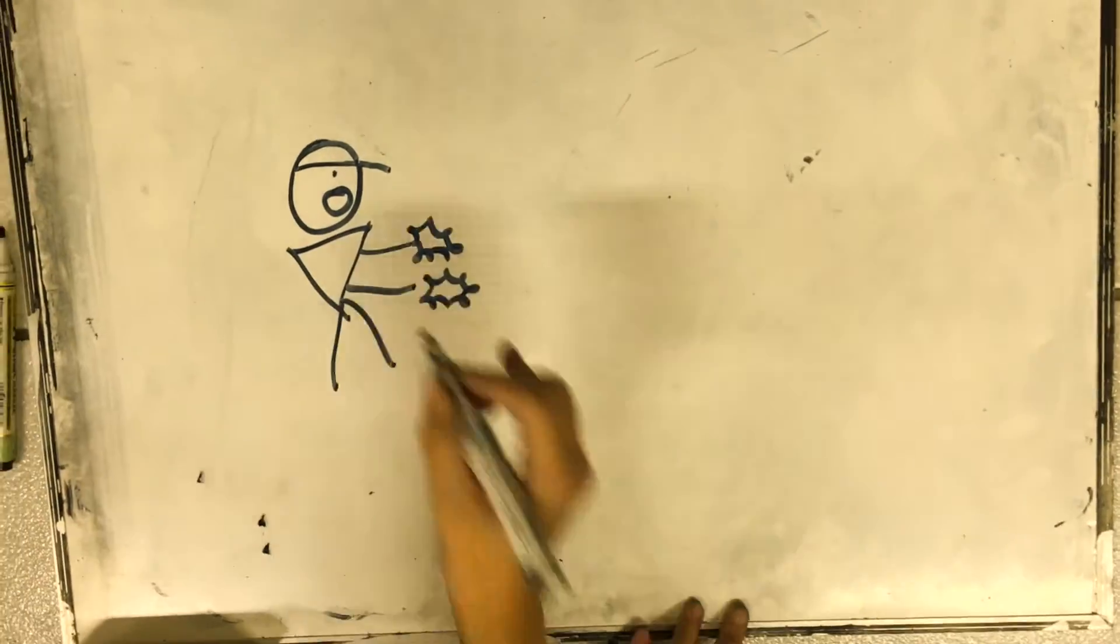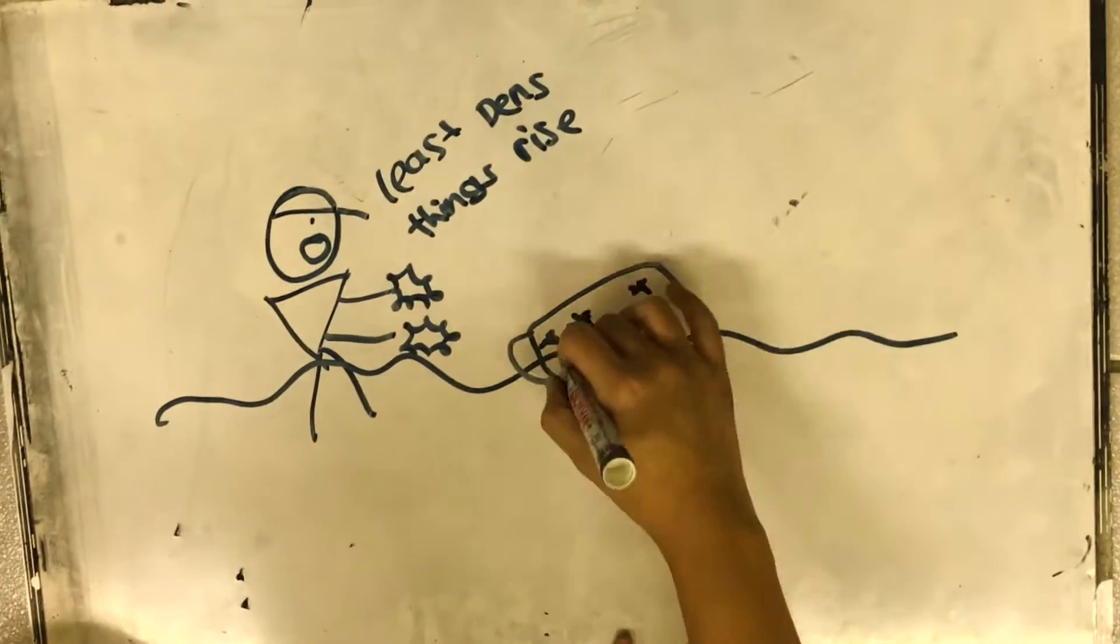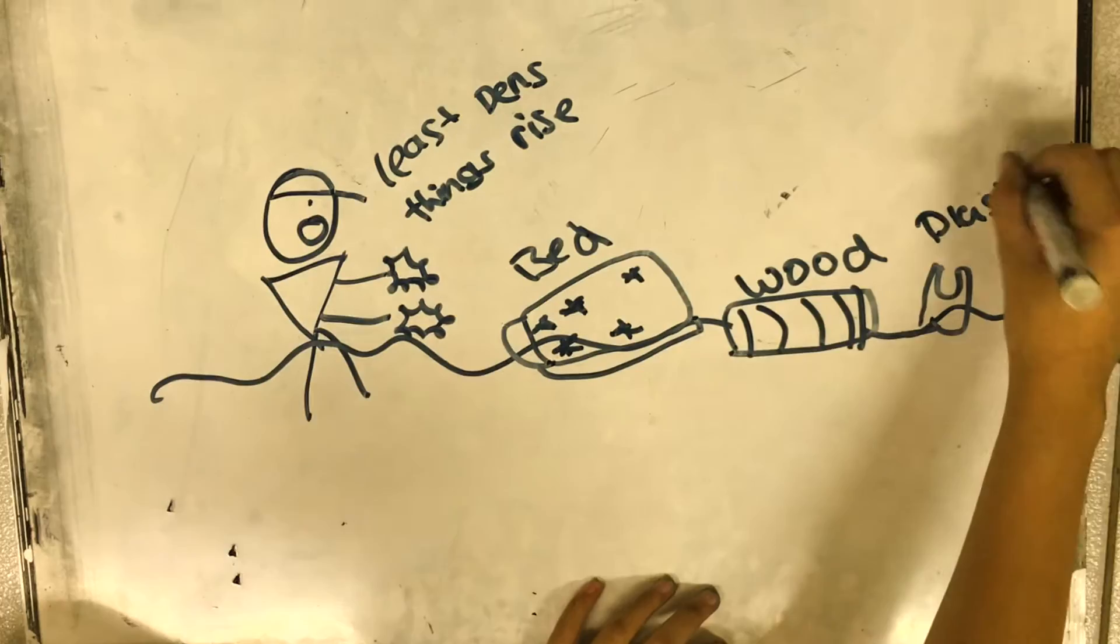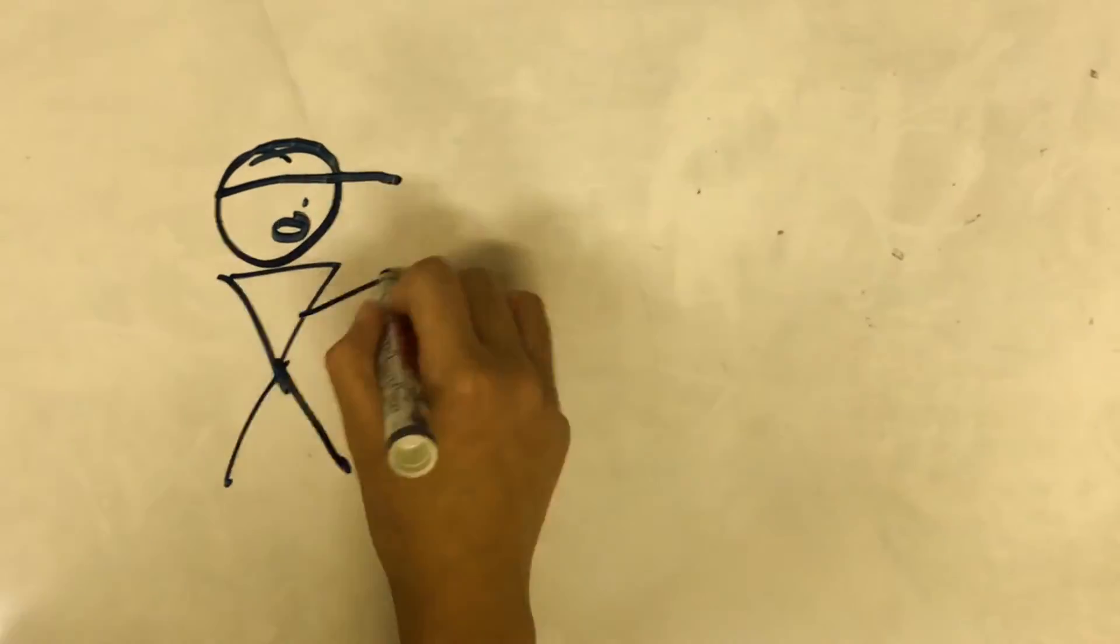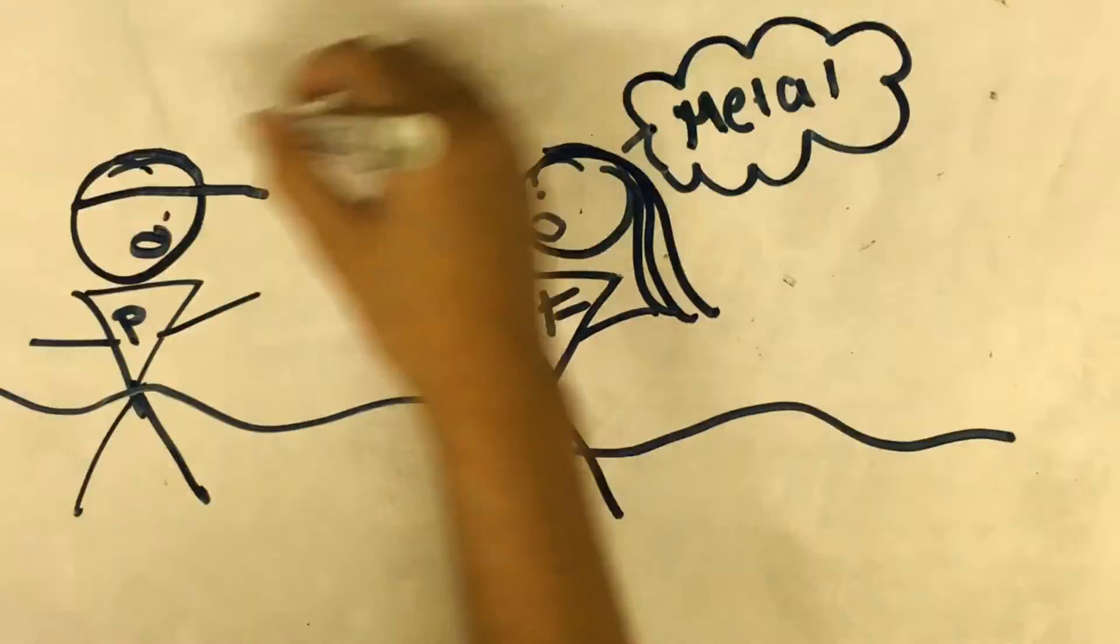He knew that least dense things will rise, like beds and woods. According to the Archimedes principle, if the weight of the object being placed in the water is less than the weight of the water displaced, the object will float. So this way, non-metal will work better.